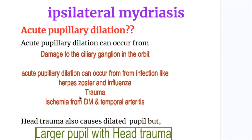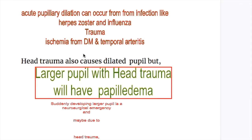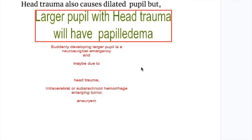Acute pupillary dilatation can occur from damage to the ciliary ganglion in the orbit, as occurs in infections like herpes zoster and influenza, or may be due to trauma or ischemic conditions. Ischemia may occur in diabetes mellitus and temporal arteritis. Head trauma also causes a dilated pupil, which will be accompanied by neurological features and papilledema.